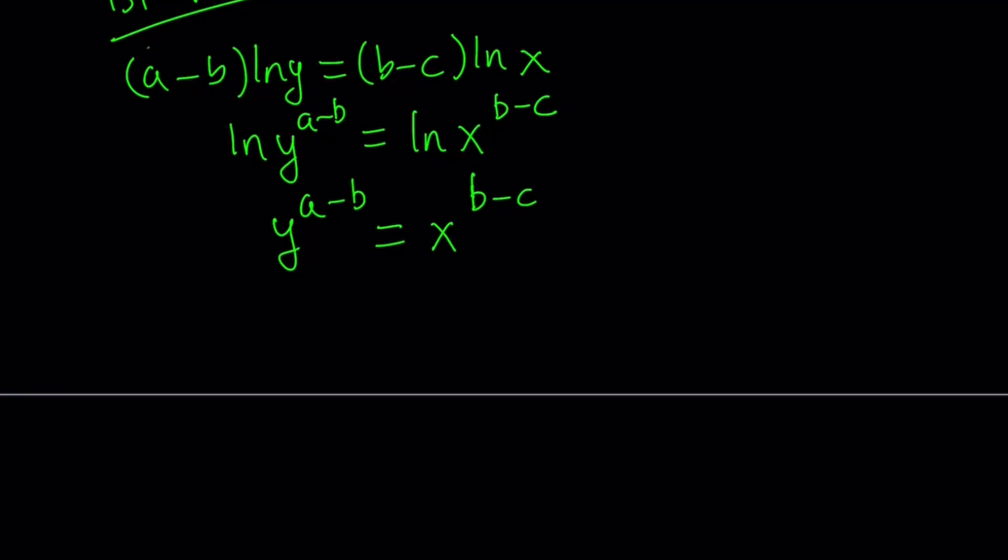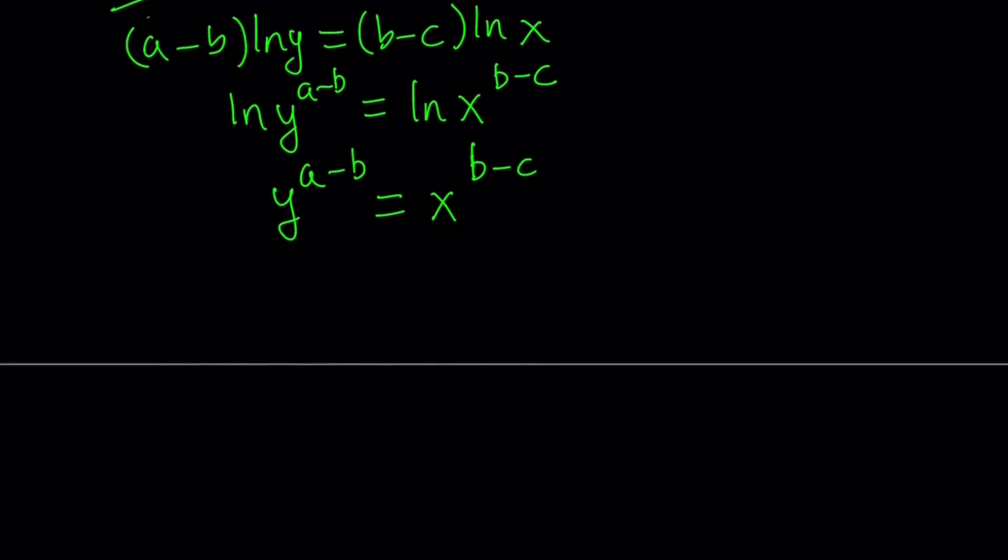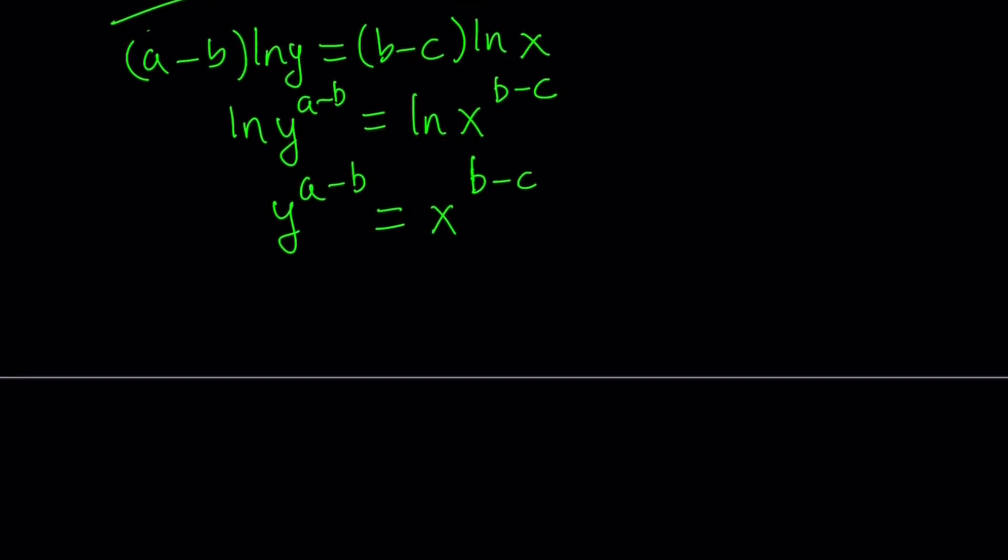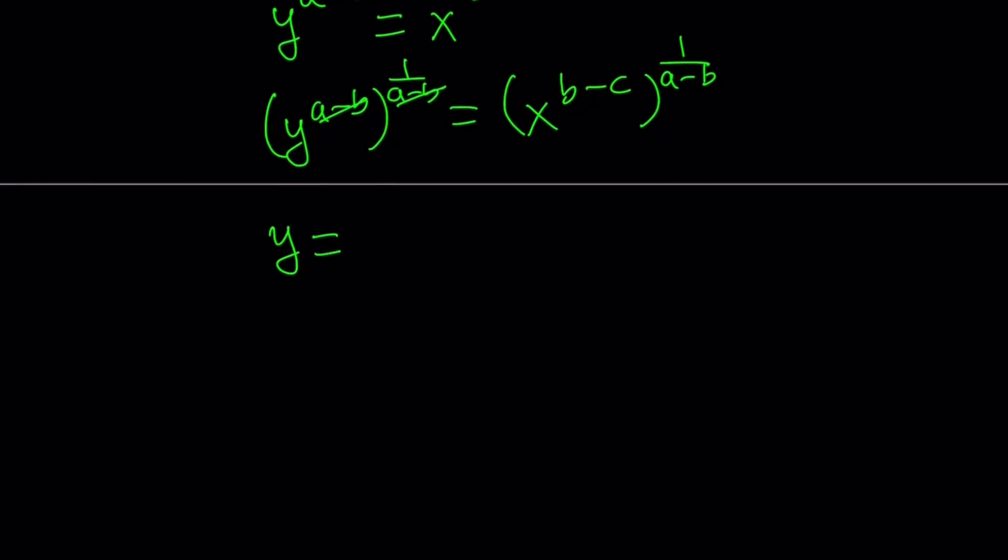Again, a, b, c are all different. So, a minus b or b minus c or c minus a can never equal zero. Great. So, here's what I'd like to do from here. I want to isolate y and write it in terms of x. So, let's go ahead and raise both sides to the power 1 over a minus b. And then from here, a minus b cancels out, and we end up with y on the left-hand side. And on the right-hand side, we get x to the power b minus c over a minus b. So, this is something we're going to use later. Let's go ahead and save it for later.